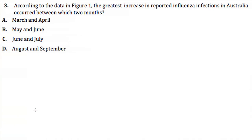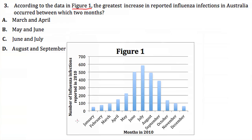Question 3 asks: according to Figure 1, the greatest increase in reported influenza infections in Australia occurred between which two months? Looking at Figure 1 for the largest increase from one bar to the next — there is a large jump that could be mistaken for an increase, but it's actually a decrease. The biggest increase is between May and June, so the best answer is answer B.